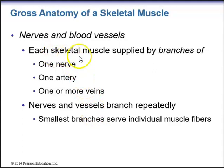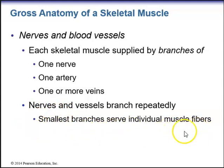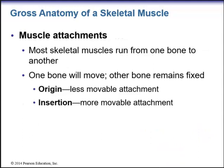With regards to nerve and blood supply, each skeletal muscle is supplied by branches of one nerve, one artery, and one or more veins. Nerves and vessels branch repeatedly, and the smallest branches serve individual muscle fibers. Most skeletal muscles run from one bone to another — one bone moves while the other remains fixed.